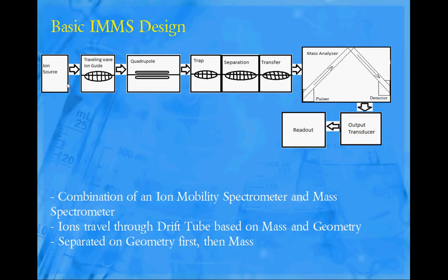Next it goes into a quadrupole and that quadrupole provides an oscillating electric field and gives a slight separation based on mass to charge ratio and in some ways stabilizes the ions on a correct path. And I already went into the ion mobility part.